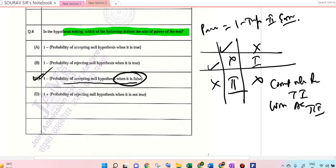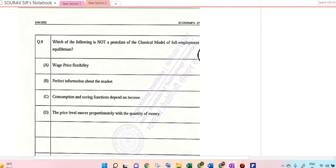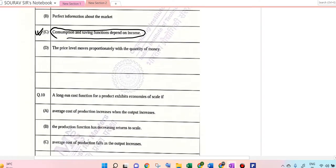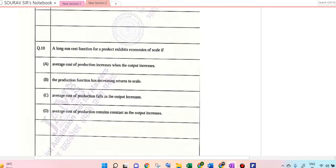Now let's go to question number 9. Which of the following is not a postulate of the classical model of full employment equilibrium? Here, consumption and saving function depend on income. This is completely wrong - they are depending on income. So this is your answer, 9 is C.